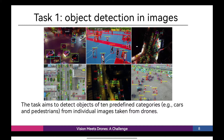We manually annotate the bounding boxes of different categories of objects in each image. In addition, we also provide two kinds of useful annotations: occlusion ratio and truncation ratio. Specifically, we use the fraction of objects being occluded to define the occlusion ratio. The truncation ratio is used to indicate the degree of object parts appearing outside a frame. If an object is not fully captured within a frame, we annotate the bounding box across the frame boundary and estimate the truncation ratio based on the region outside the image. It's worth mentioning that a target is ignored during evaluation if its truncation ratio is larger than 50%. Annotations on the training and validation sets are publicly available.